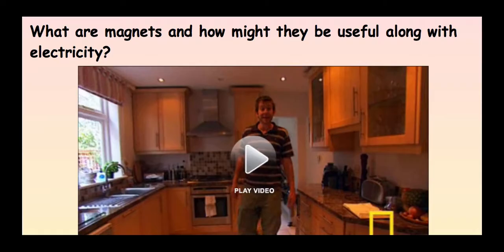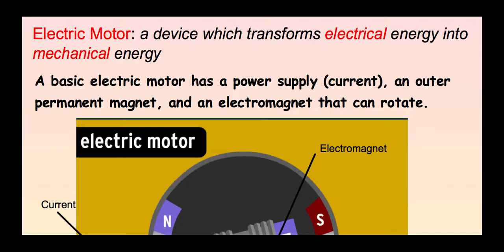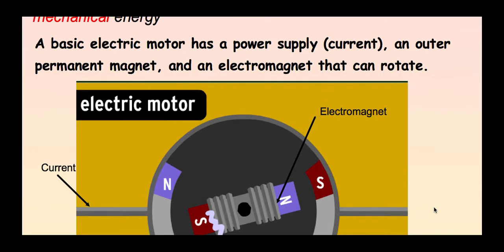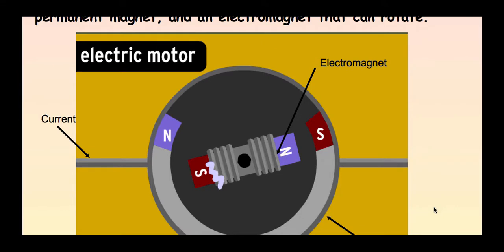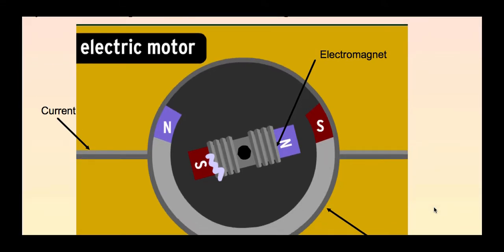So we'll move on to our next point. So an electric motor is a device which transforms electrical energy into mechanical energy. So this works with magnets. A basic electric motor has a power supply, which is the electric current usually, but sometimes it's other things. An outer permanent magnet, an electromagnet that can rotate. So this is what an electric motor looks like. So this is very similar to what we just made. The current is coming in through the electricity. Then it magnetizes the surrounding permanent magnet. Then this inner magnet moves because the outer part has been magnetized.